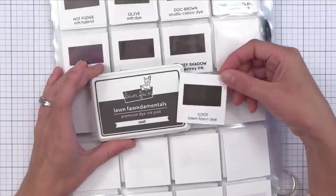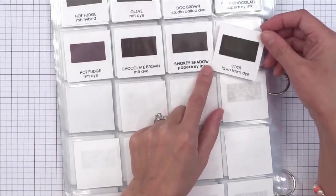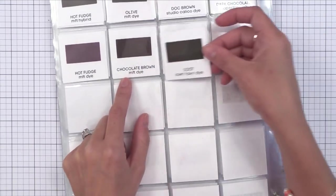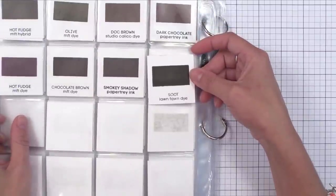There is also Soot, which is a super dark brown color. It's almost black, but not quite black. You can see how it compares with some of the others here. I think it's fun to sometimes stamp a sentiment in a dark brown on a warm colored card instead of black.